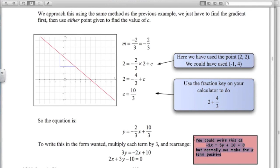And as I've got over here, we could write it this way. Minus 2X minus 3Y plus 10 equals 0. But normally we make the X term positive.